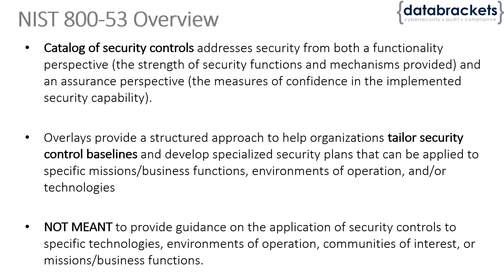At its core, 853 is a catalog of all security controls, both from a functionality perspective and from an assurance perspective. Functionality refers to the built-in functions you are supposed to have as part of your security process. Assurance refers to the capability of what you can do — for example, in access control, do you have the capability to audit all administrative activities going on in your environment?